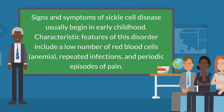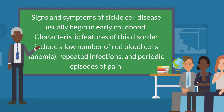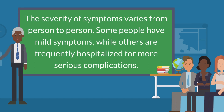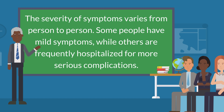Signs and symptoms of sickle cell disease usually begin in early childhood. Characteristic features of this disorder include a low number of red blood cells, anemia, repeated infections, and periodic episodes of pain. The severity of symptoms varies from person to person. Some people have mild symptoms, while others are frequently hospitalized for more serious complications.